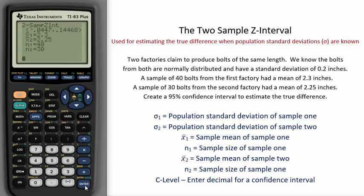negative 0.0447 to 0.14468, is trying to estimate the true difference between factory 1's length minus factory 2's length.